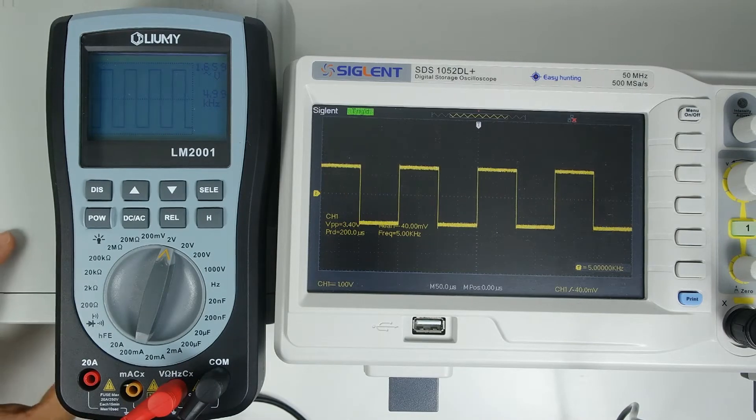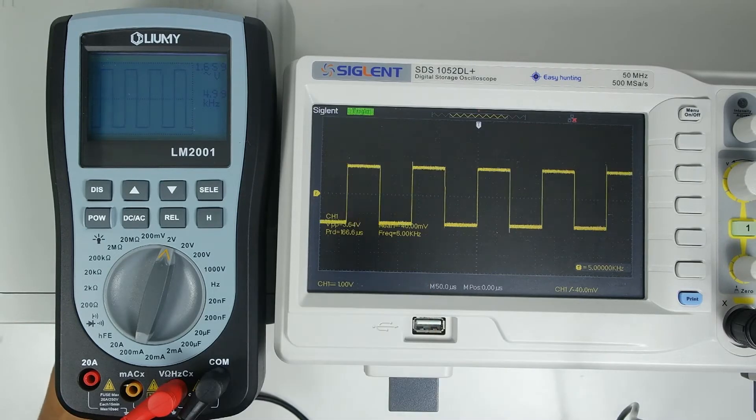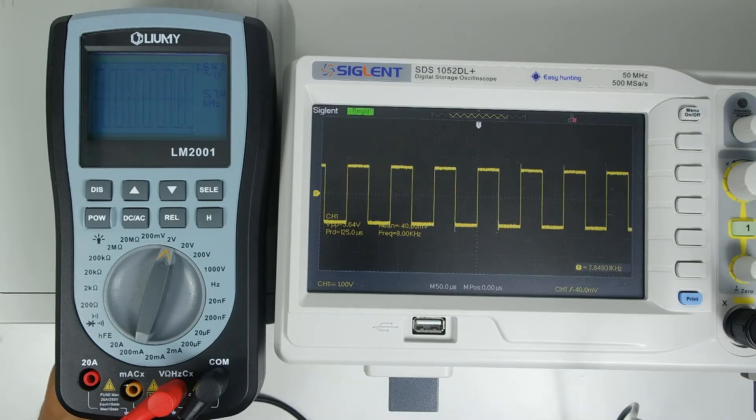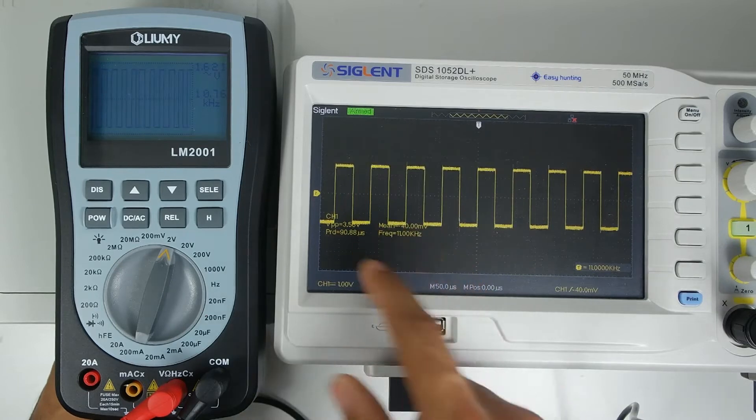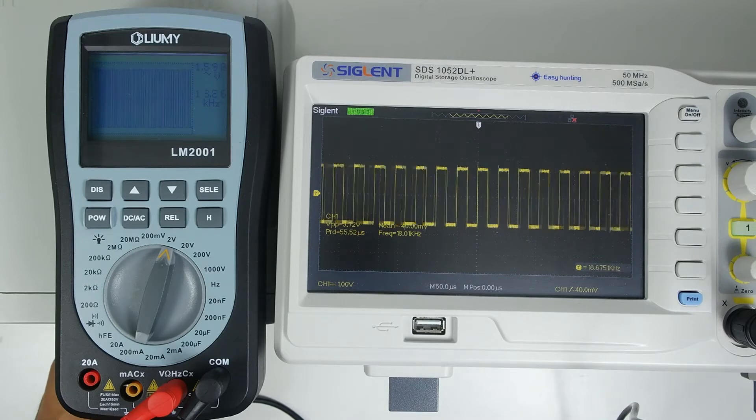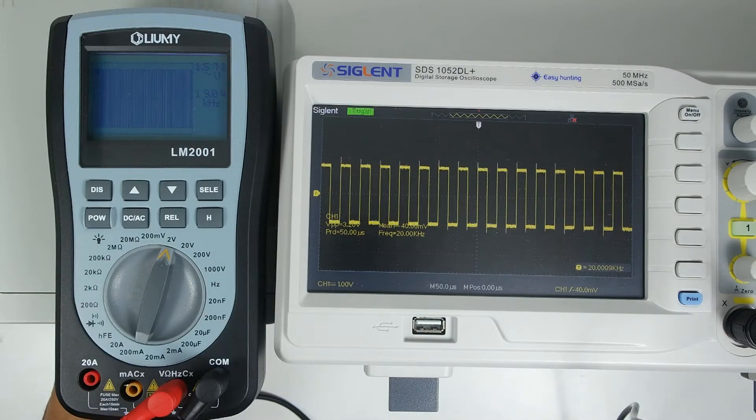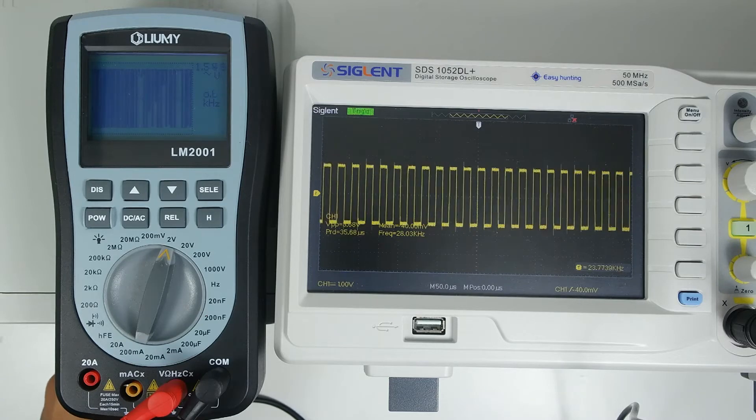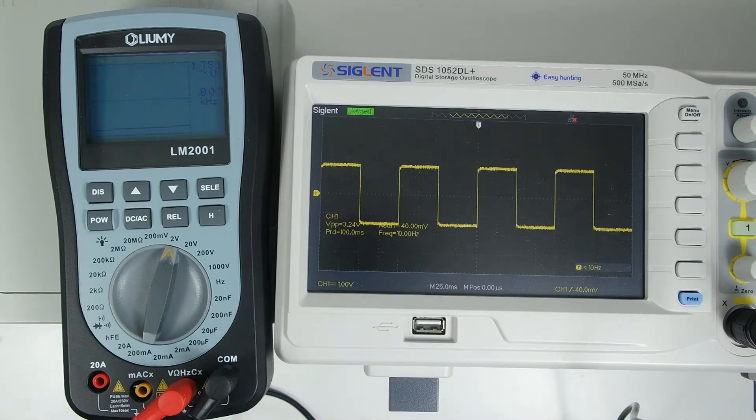Here we can test with different frequencies and see what happens once we increase or decrease the frequency. Keep in mind that the maximum frequency that this multimeter can do is 10 kHz. It seems like we are having issues in the lower frequencies because it cannot detect properly the lower frequencies.